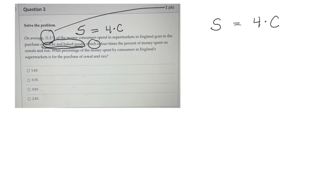But they spend 11% on snacks. So this would be 11.2% equals four times C. So if they want to know how much is spent on cereal and rice, to solve for C, I'll divide both sides by four.